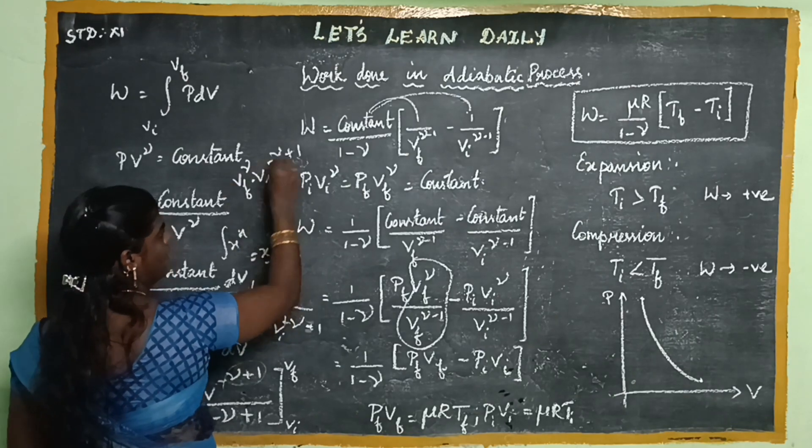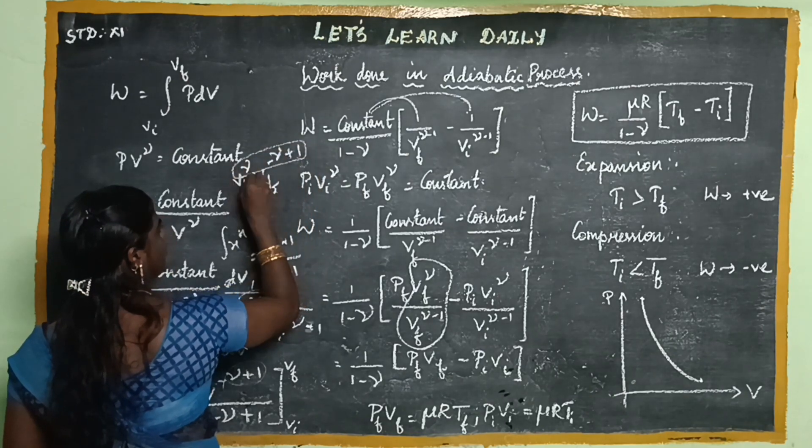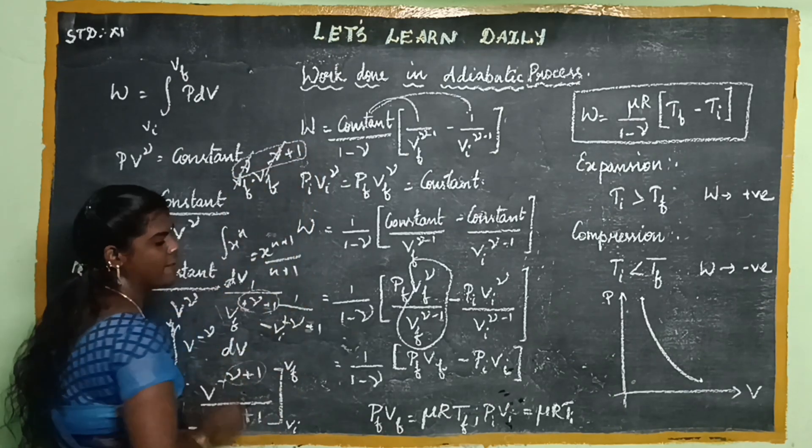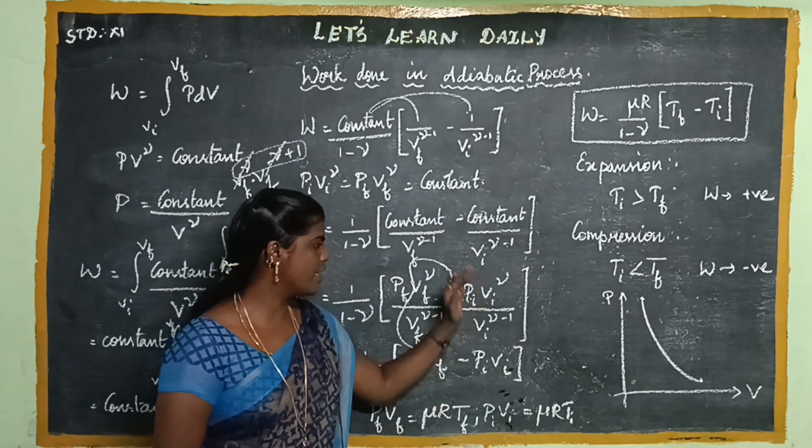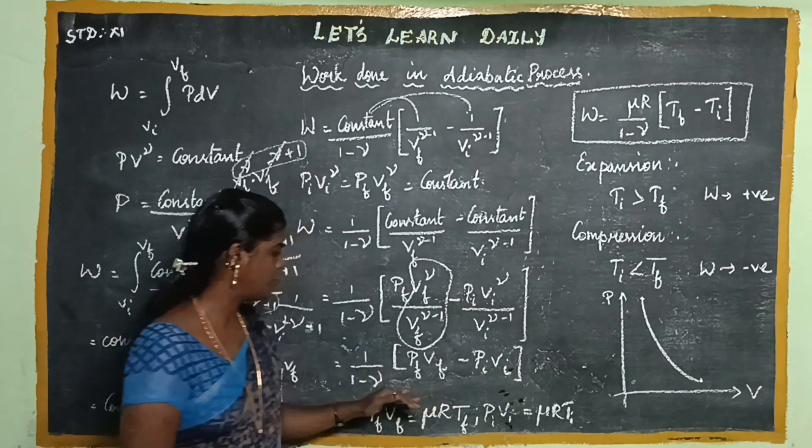When we substitute and rearrange, we get PFVF minus PIVI.